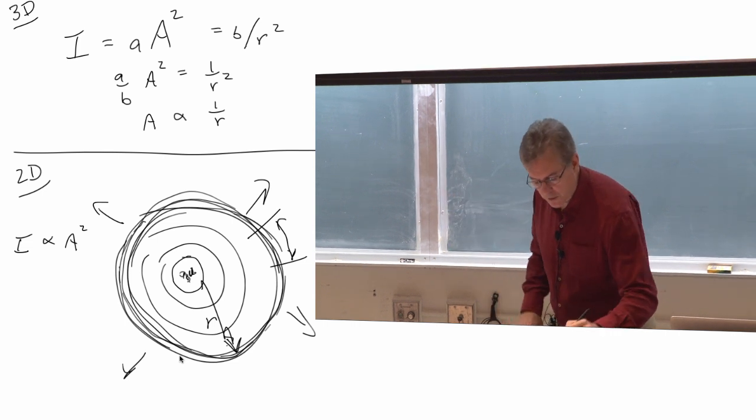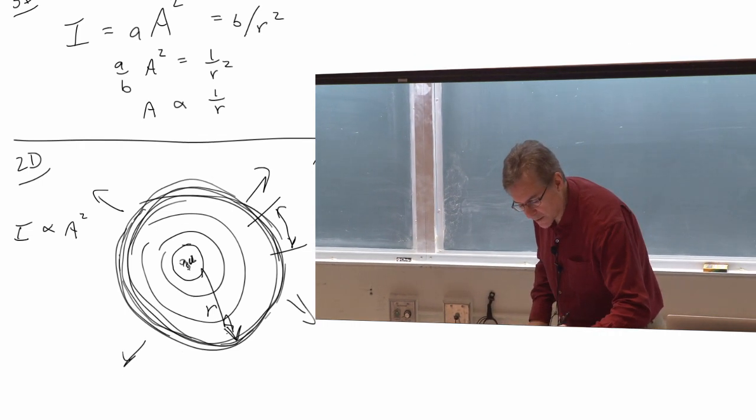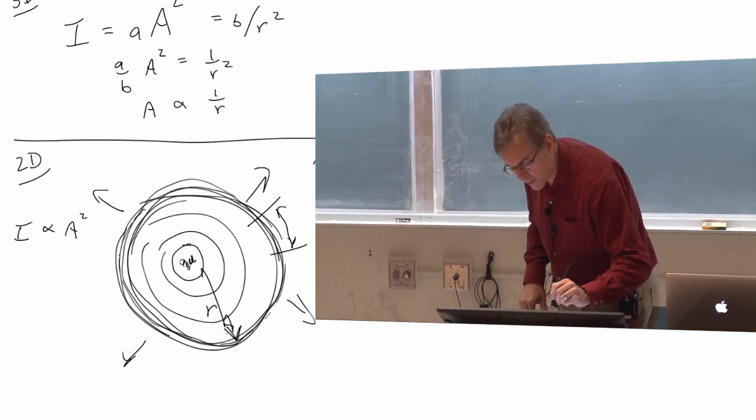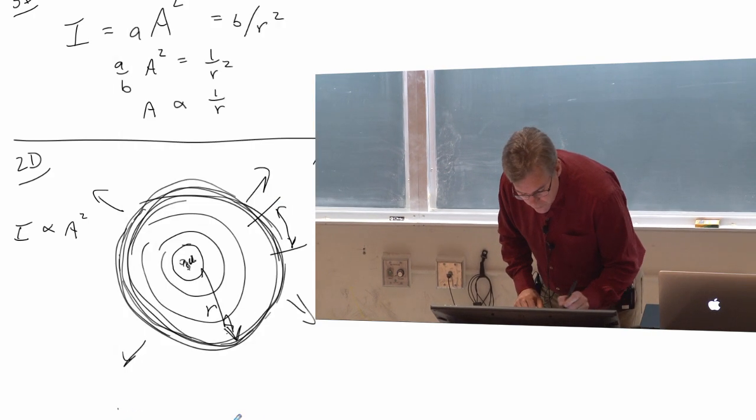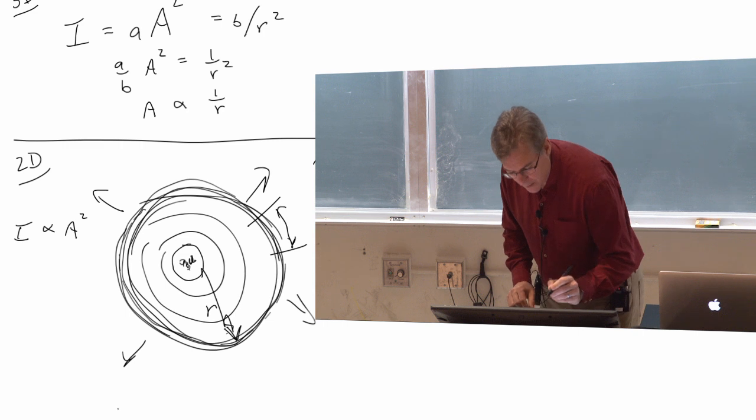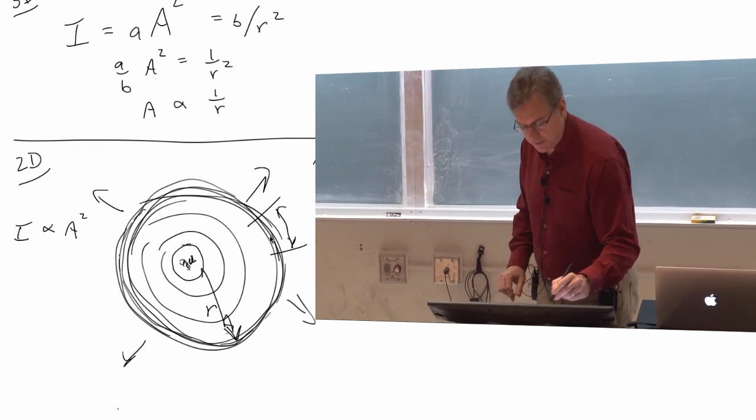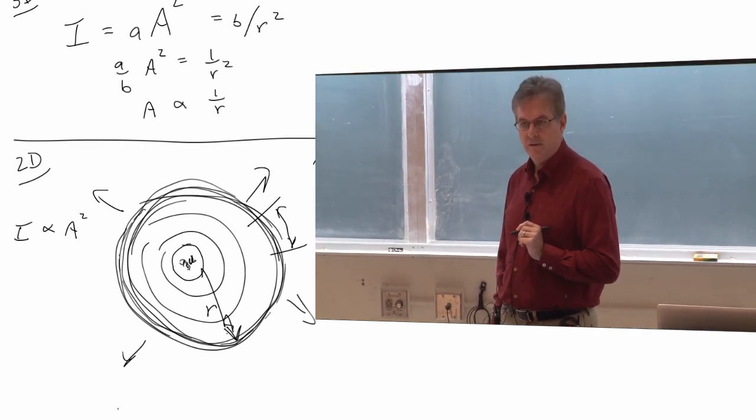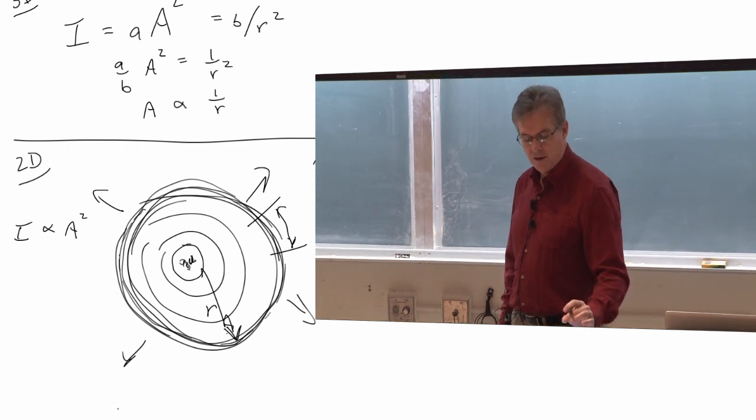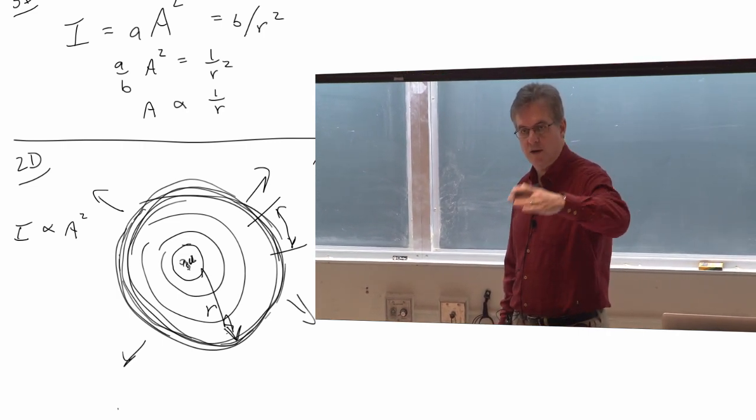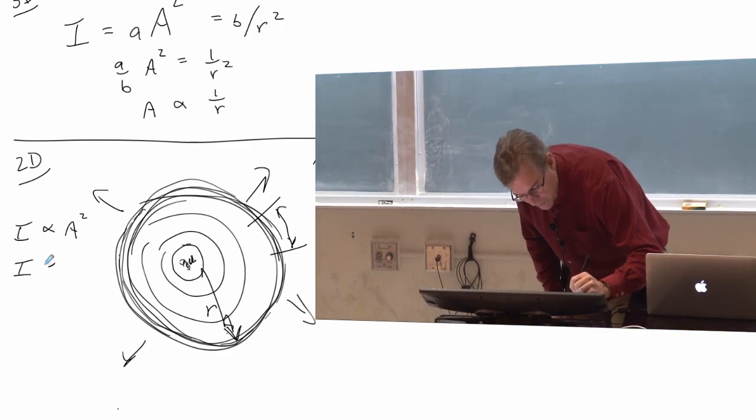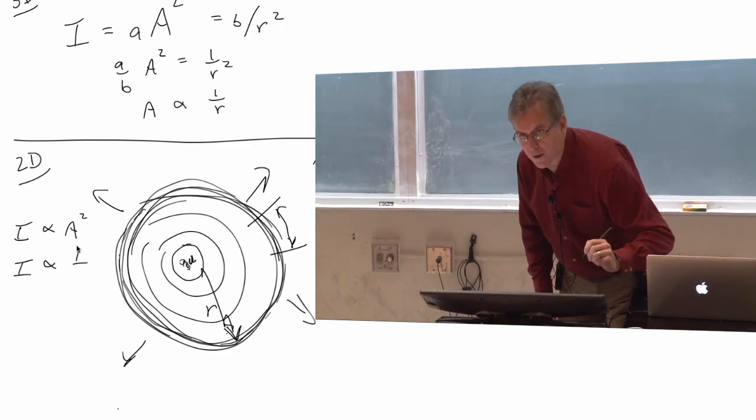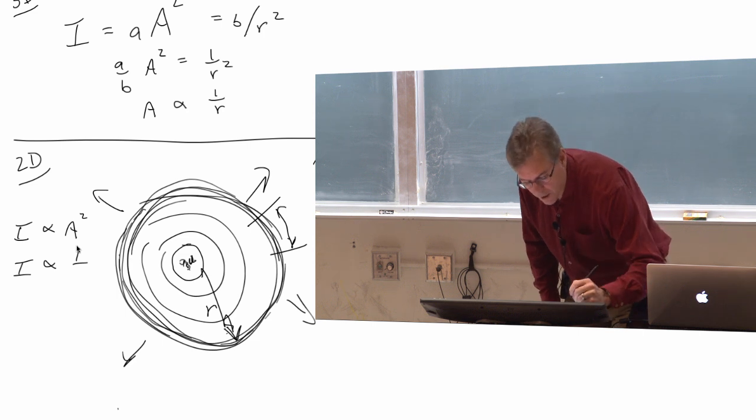And the whole circle has a circumference of 2 pi times the radius. So the same amount of energy when you go to a larger radius is spread out over a larger distance, proportional to the radius. The bigger the radius, the more distance over which it's spread out. So now we see that the intensity is also proportional then to 1 over r.